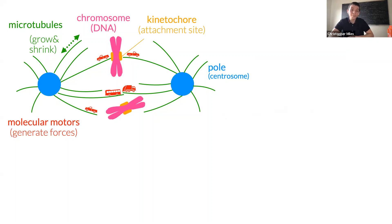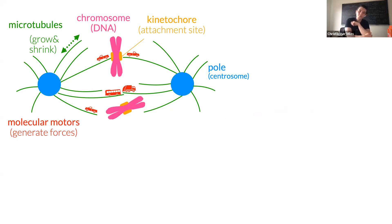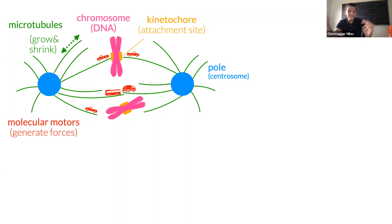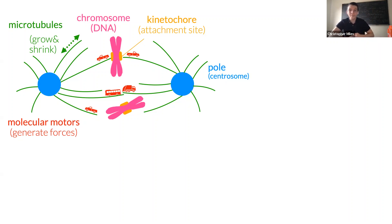There's one last component: to move stuff around you have to generate forces, and that ingredient is tiny proteins called molecular motor proteins. They're really fascinating — you can think of them as little cars that walk along the microtubule filaments and in doing so generate forces. So there are proteins floating around that attach to stuff and generate forces so things can move. Microtubules are the architecture; motor proteins generate the forces.